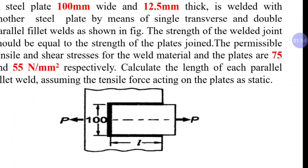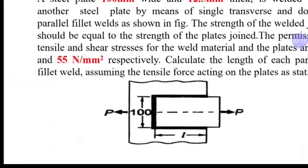Single transverse and double parallel fillet weld configuration: one plate on each side. The single transverse weld length is L1 and the parallel weld length on each side is L2.